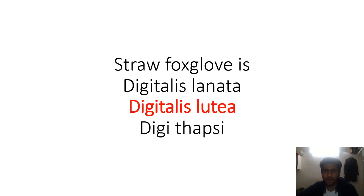Straw foxglove. Foxglove is basically Digitalis. Purpurea is the other name - Digitalis lanata, Digitalis purpurea. Let me know which Digitalis has more amount of digoxin and which Digitalis has more amount of digitoxin. This was last year's CVT question.